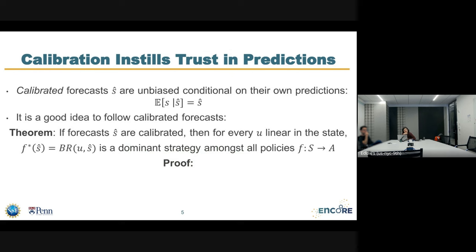The concept of calibration is known as a particularly nice way of enforcing this. The definition of calibration is that whenever you predict some ŝ, then conditional on that prediction, in expectation ŝ will transpire. The expectation would be interpreted in the empirical sense in an online setting, which we'll look at today.